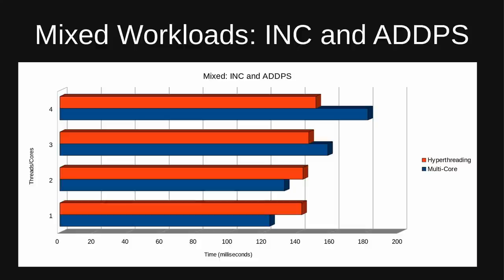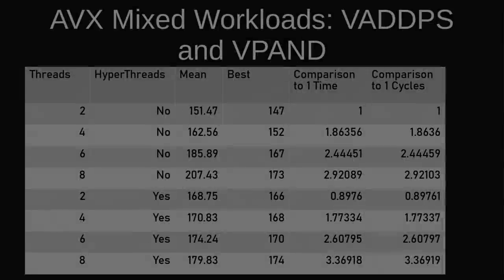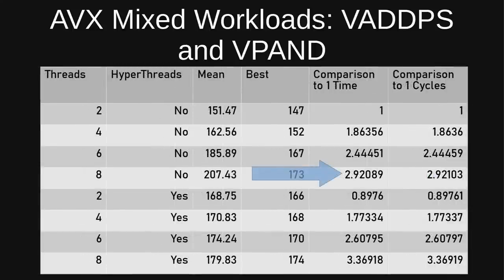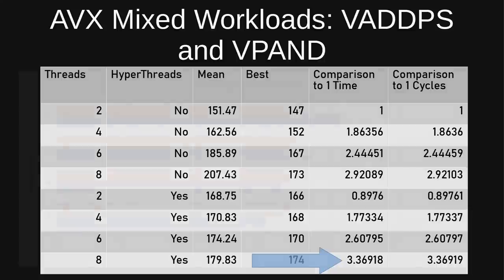Something similar happens with AVX. Here I've got mixed AVX workloads — AVX floating point (VADPS) paired with AVX integer (VPAND). When the OS schedules itself, we get about 2.92 times the performance of two threads from eight threads. But if we force the integer and floating point instructions to pair together in each core and hyperthread, we end up with a much better score of 3.37 times. So if you can pair your workloads like that — it's not often that you can, but if you can — you get a nice little bonus over OS scheduling.